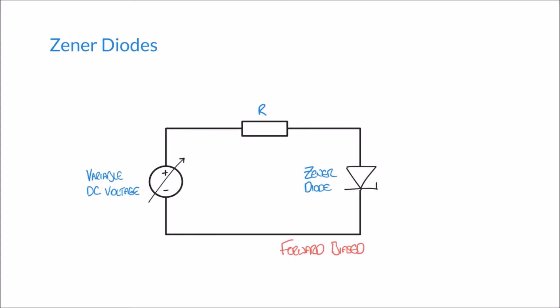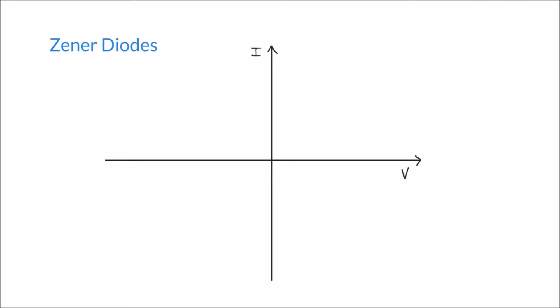Here in this diagram I've got an image of a circuit which has a variable DC voltage supply and a resistor and a Zener diode. The Zener diode in this particular circuit is forward biased and so current is going to be allowed to flow in this particular circuit.